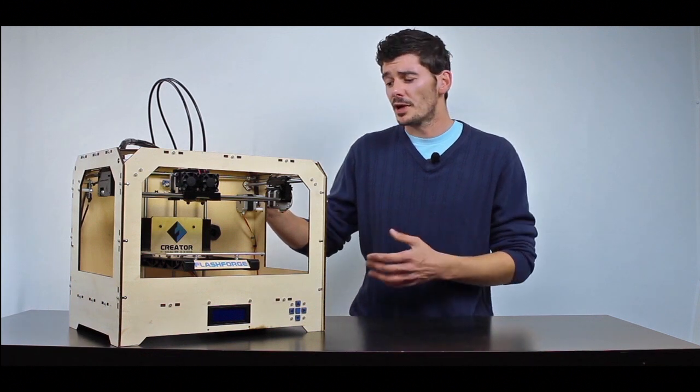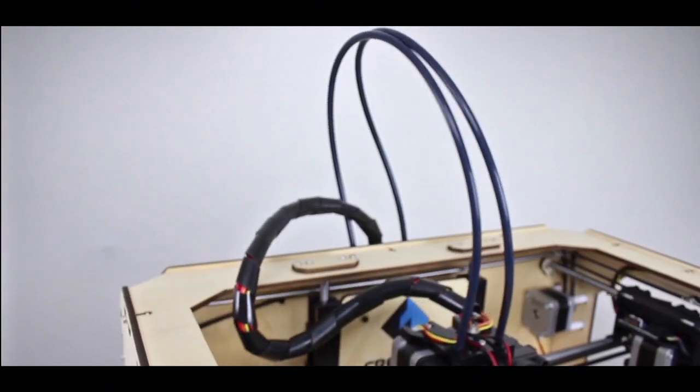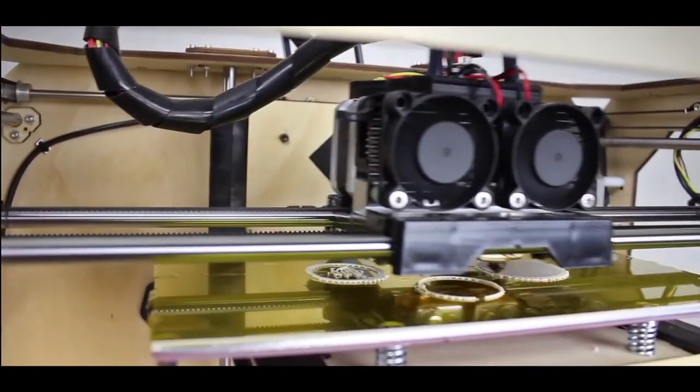Like most 3D printers, the Creator works by feeding ABS plastic up through these tubes, heating up here in the extruder, before printing out the molten plastic layers down here on the build platform.